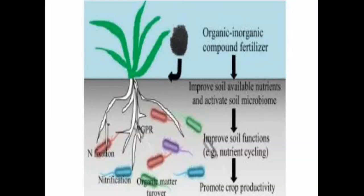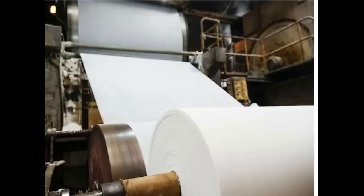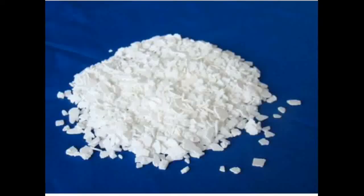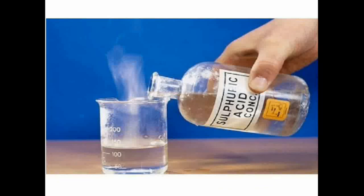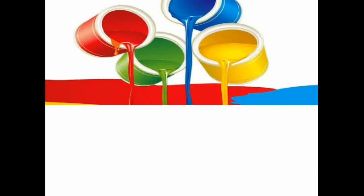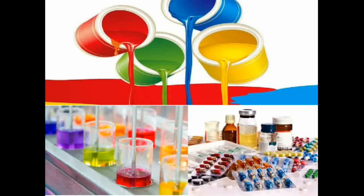Acids are used for the production of chemical fertilizers and making white paper. Hydrochloric acid is used to prepare different types of chloride salts. Hydrochloric acid is also a strong acid and is very useful for cleaning sanitary wares. Sulphuric acid is used for car batteries and is also used to manufacture paints, dyes, and medicines.